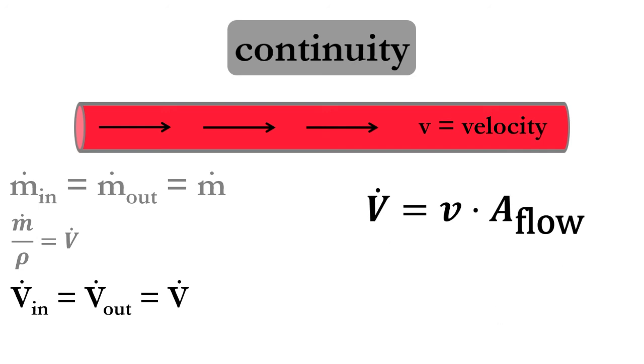Using this definition of volumetric flow rate, let's consider how the velocity changes from the beginning to the end of a straight pipe.